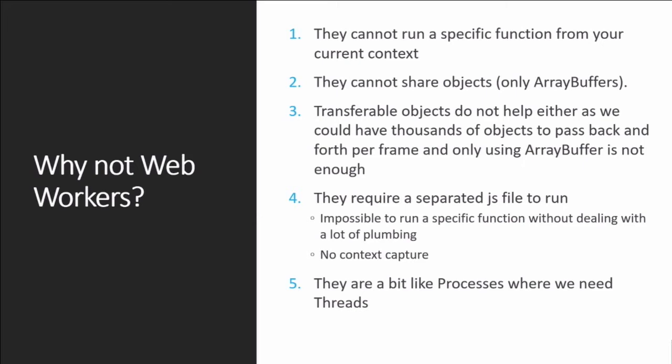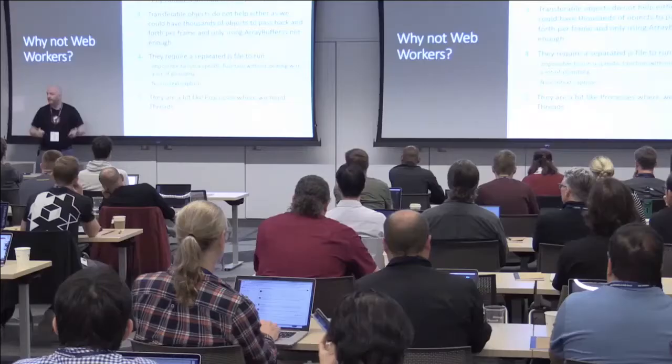Just a reminder of why web workers are not enough: they cannot run on a specific function — you can't execute a worker on a specific function from your context. You have to give it a file — the worker runs a file. Then you communicate with strings, like in the 80s. The only thing they can share are array buffers. There is a new notion of shared array buffer where they can share a Float32 array in memory — but still, I think of them as processes. If you think about a native OS, there are threads and processes — web workers are definitely processes. They share nothing with the main thread.